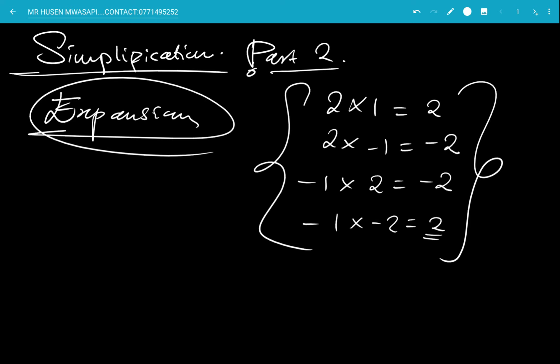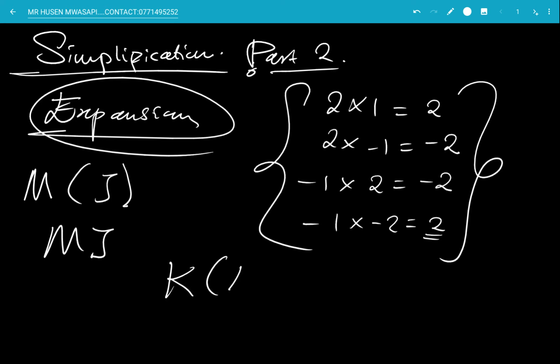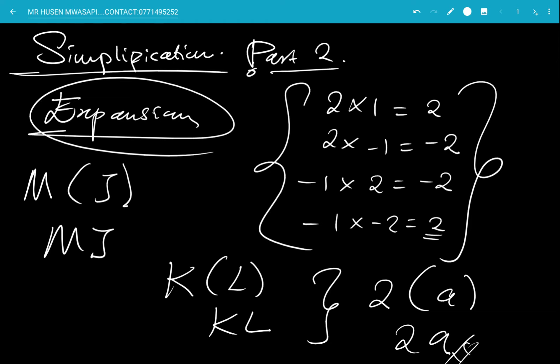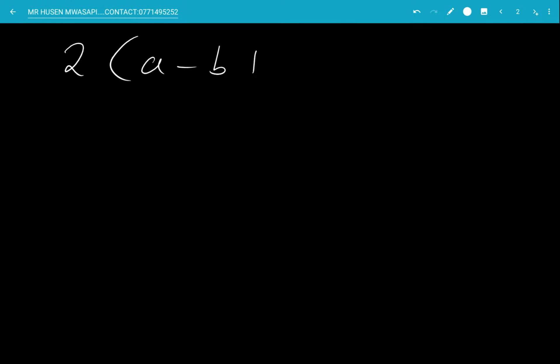When it comes to expanding, it is basically multiplying. For example, 2 times A gives you 2A. So if you have 2 open brackets A minus B plus C, this 2 multiplies everything within the brackets. These are called brackets, but in actual sense they are known as parentheses.